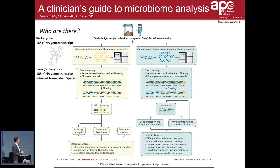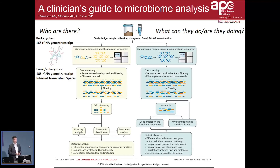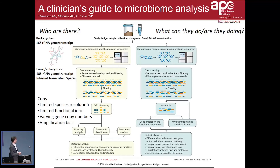If you are interested in the function of the microbiome, you would be doing shotgun metagenomics or shotgun metatranscriptomics — sequencing either DNA for metagenomics or RNA for metatranscriptomics. The first approach would answer what these bacteria can do; the other would answer what they are actually doing at that point in time. I want to point out some of the disadvantages of using 16S over the other approaches, including limited species resolution.